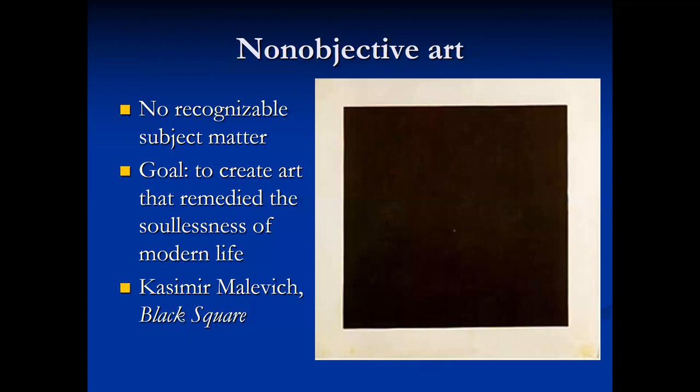Non-objective art is an art form that has no recognizable subject matter. The artist's goal was to create art that remedied the soullessness of modern life. Kazimir Malevich's 1913 Black Square may not seem like art, but there's more to it than what you see. It was exhibited during a chaotic time in Russia — World War I and the aftermath of the 1905 Russian Revolution. It was also exhibited in a high corner of the room in the spot usually reserved in a Russian home for an icon, a picture of a saint. When Malevich displayed a black square in the place where a holy image is usually found, he was making a statement about the spiritual significance of the black square and the supremacy of color and shape.